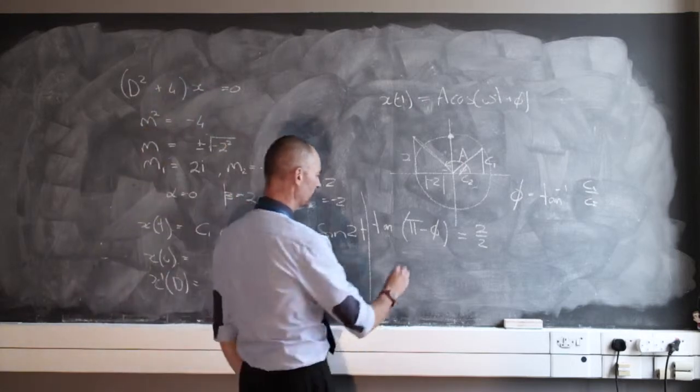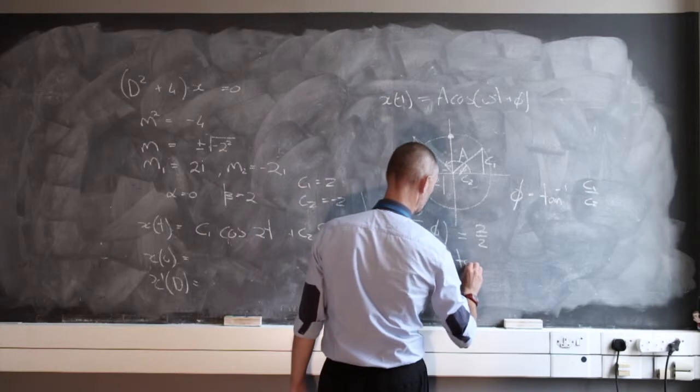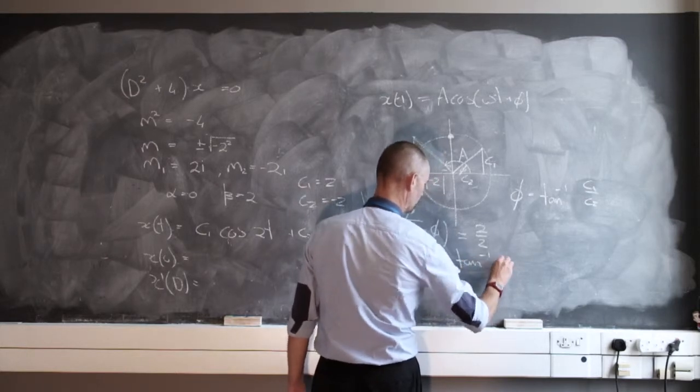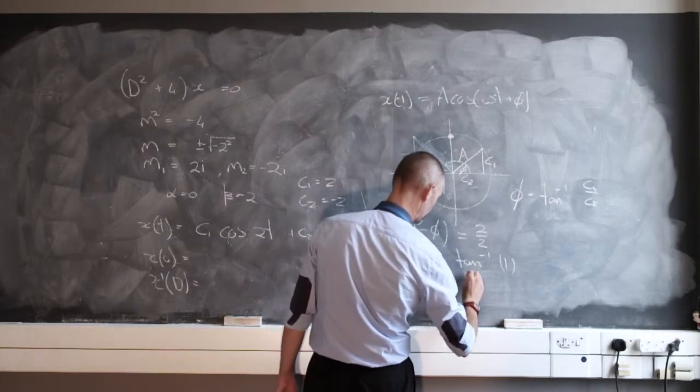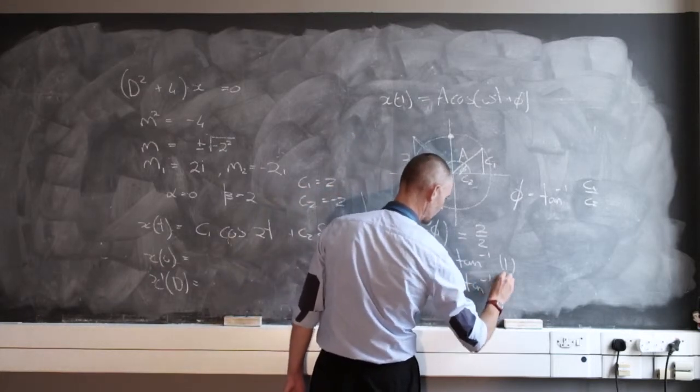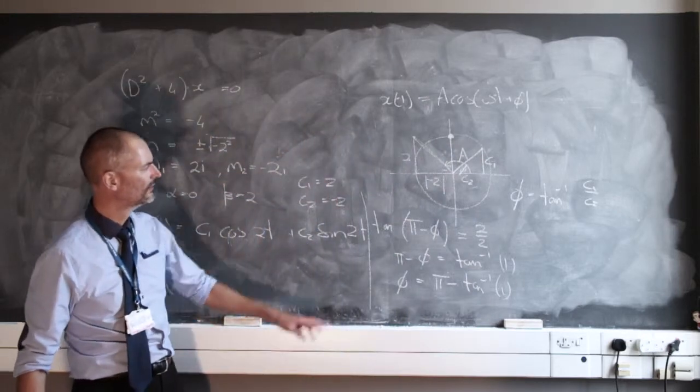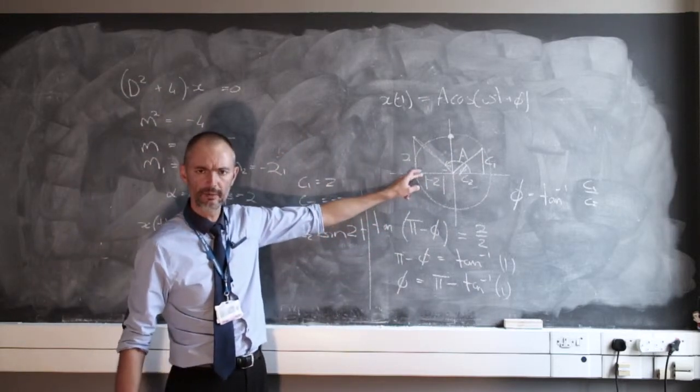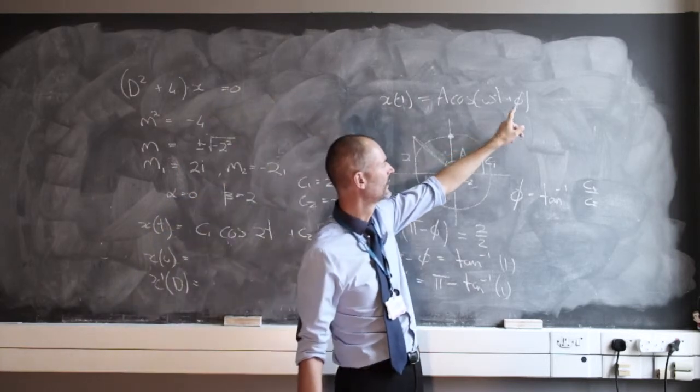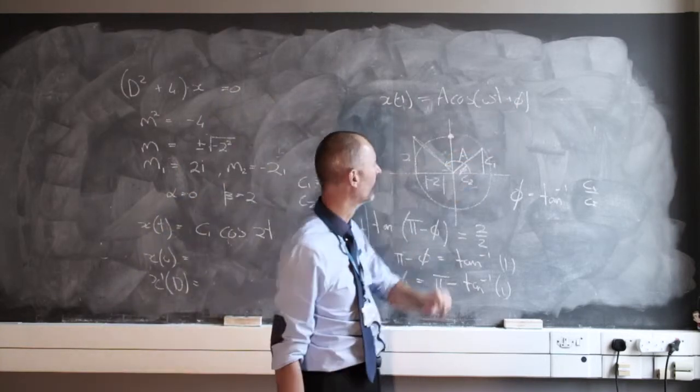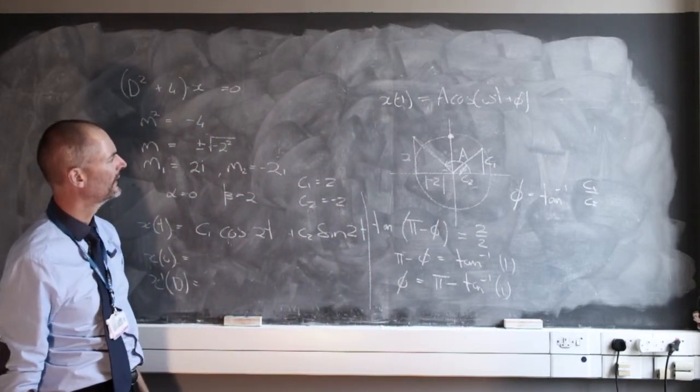And therefore, pi minus phi is going to be the arc tangent, inverse tangent of 1. In other words, phi is going to be pi minus the inverse tangent of 1. So just be very careful. Do this in your mind or on paper when you solve these problems. So that you can get the correct answer there for phi.